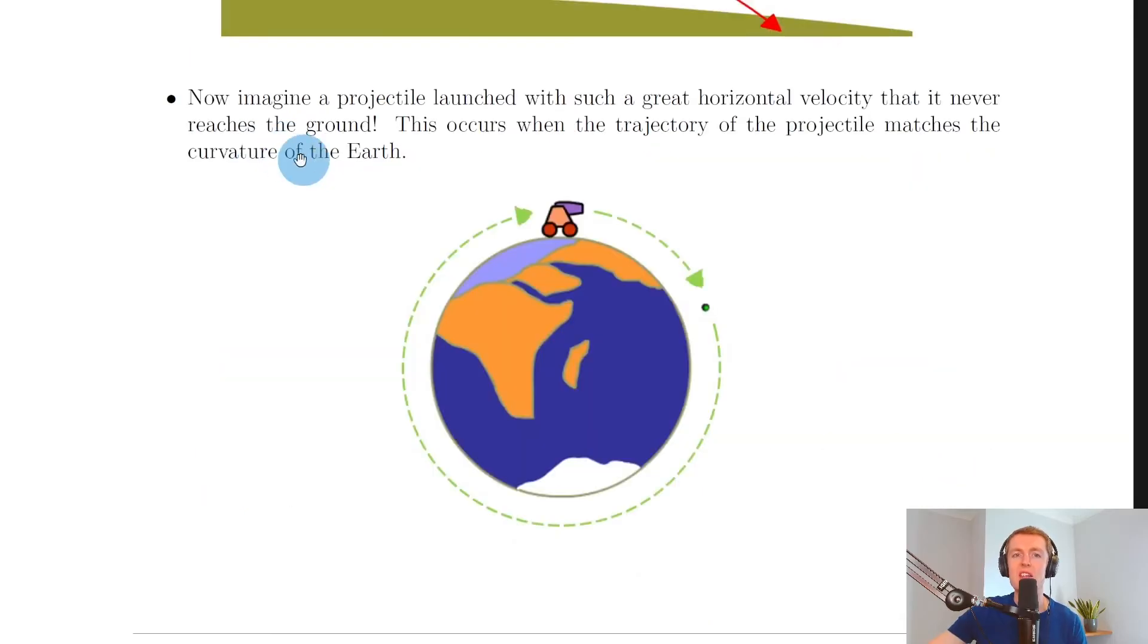You can see the surface is not a straight line; we have the horizon dipping over here, so the curvature of the Earth is taken into account. Now imagine a projectile launched with such a great horizontal velocity that it never reaches the ground. This occurs when the trajectory matches the curvature of the Earth, so the object continues moving in circular motion.